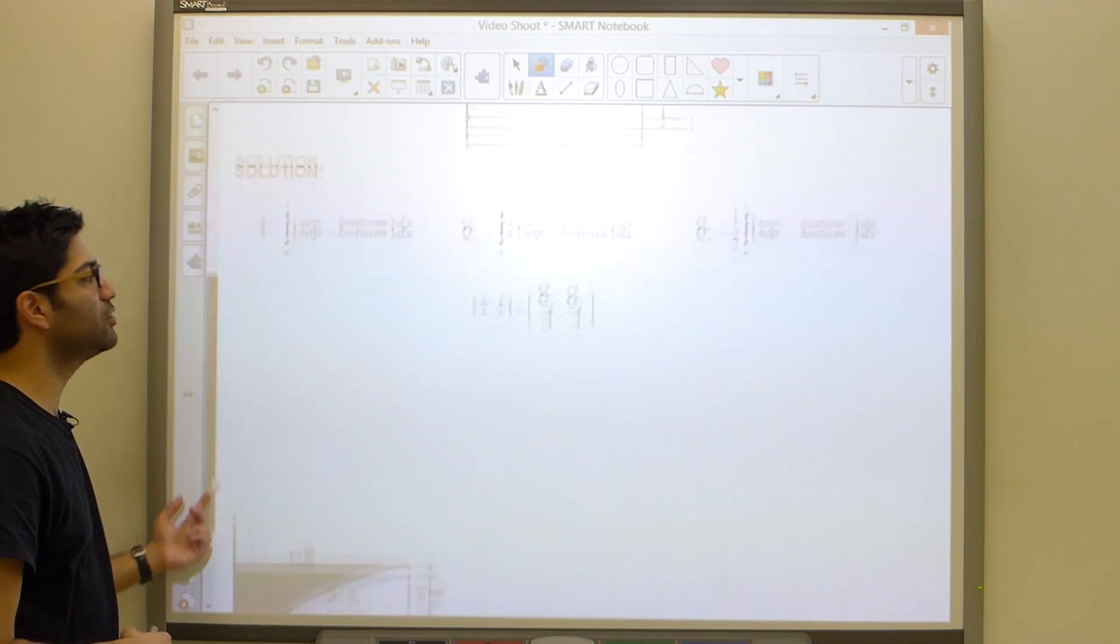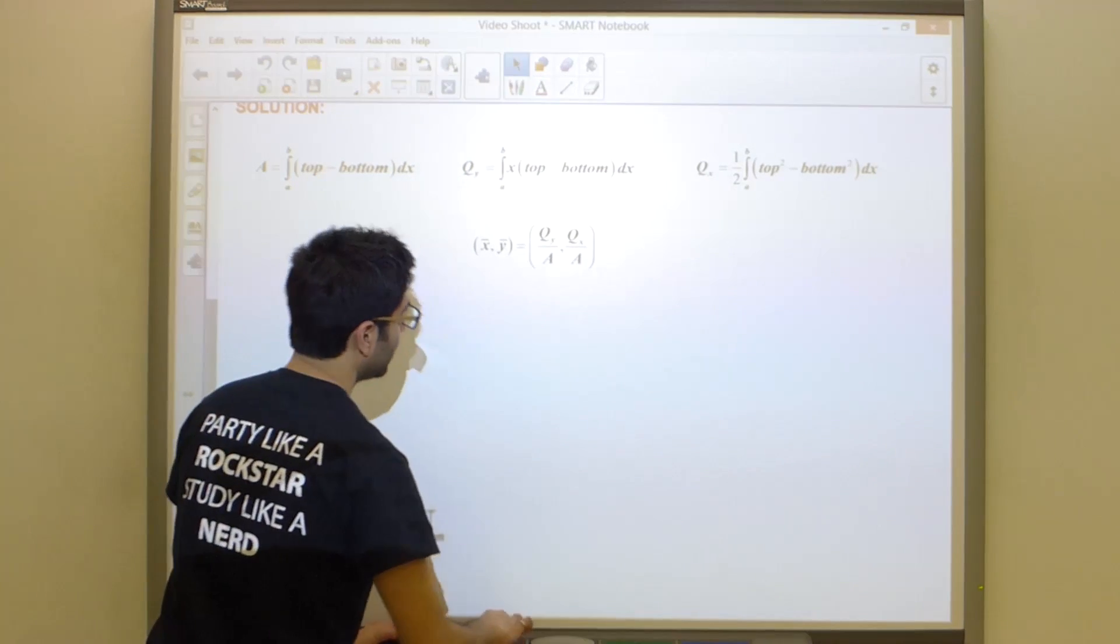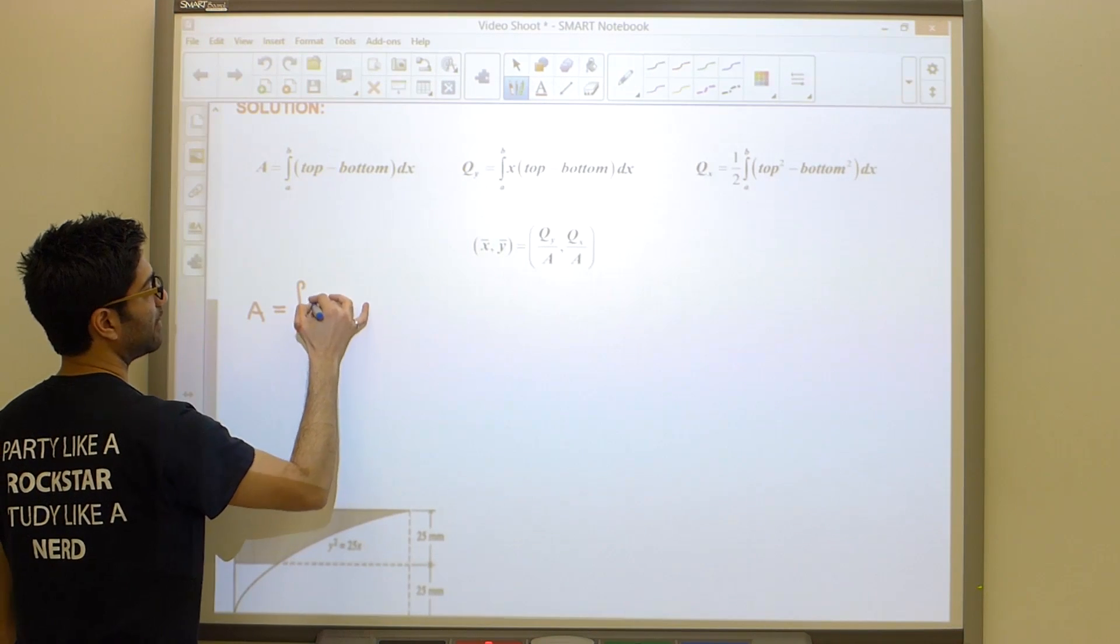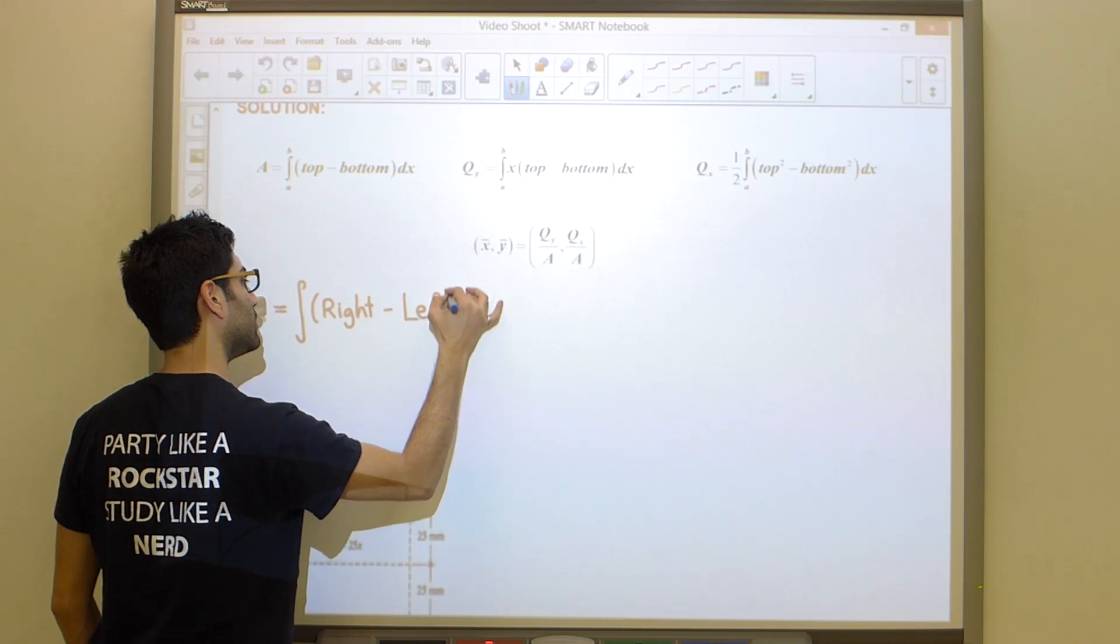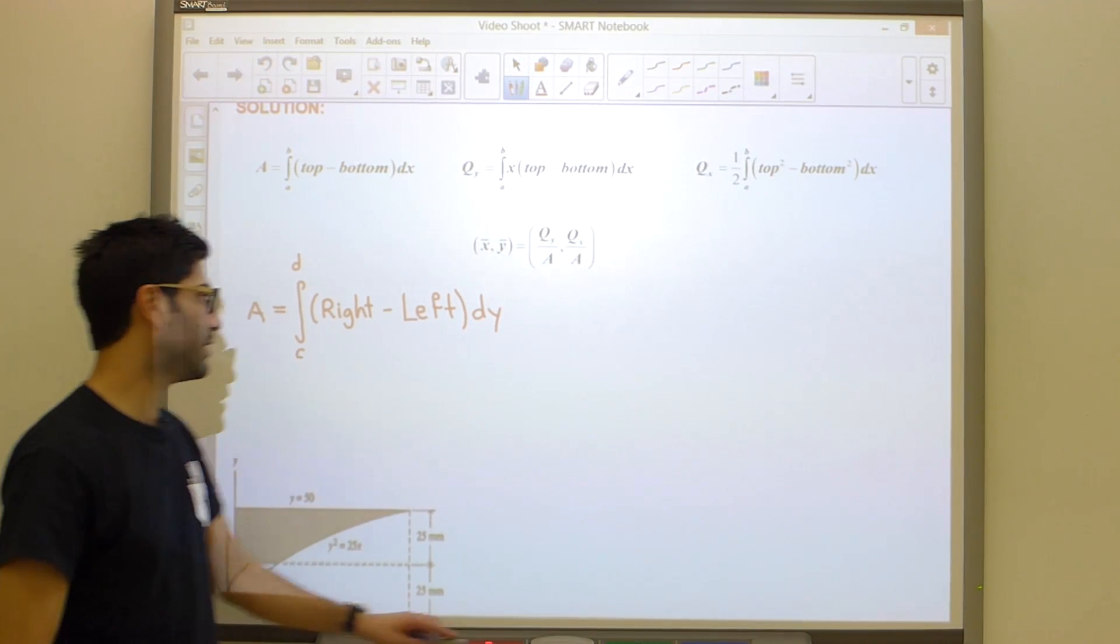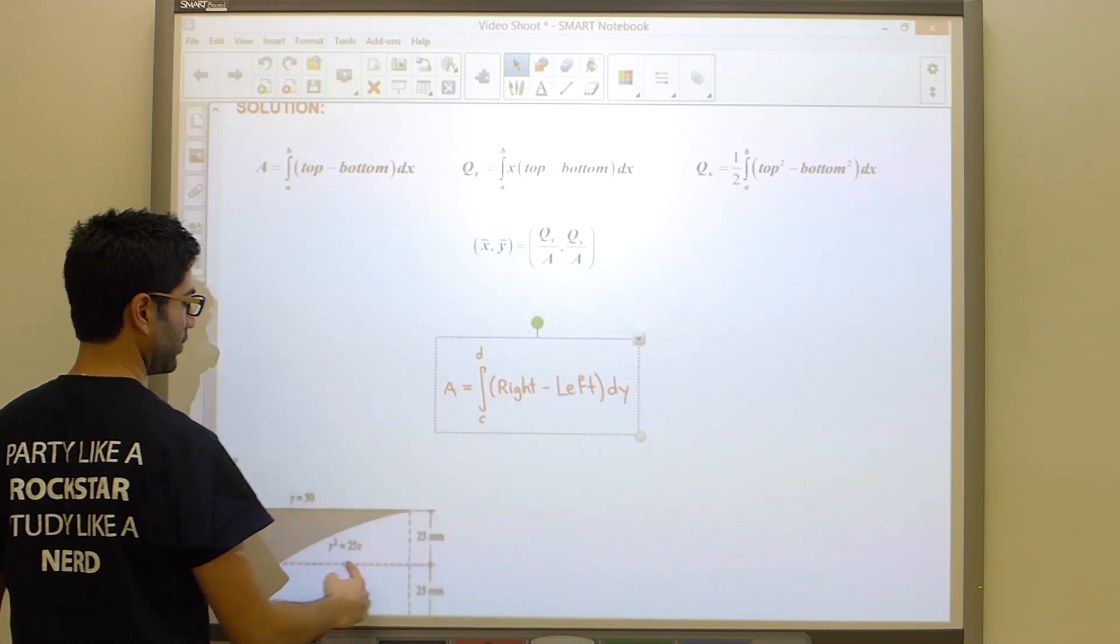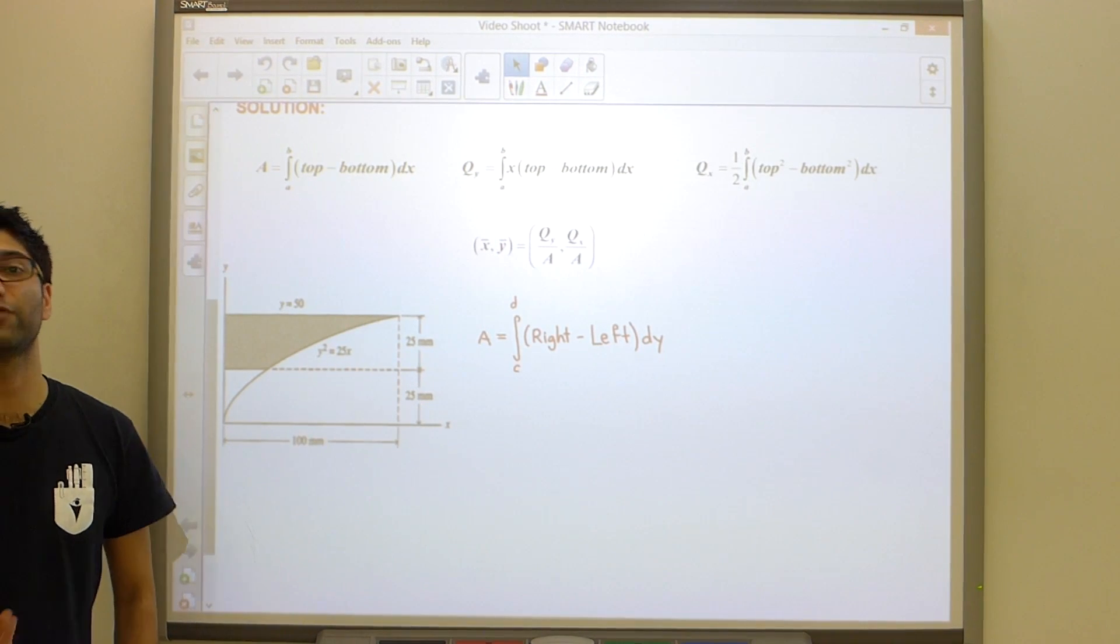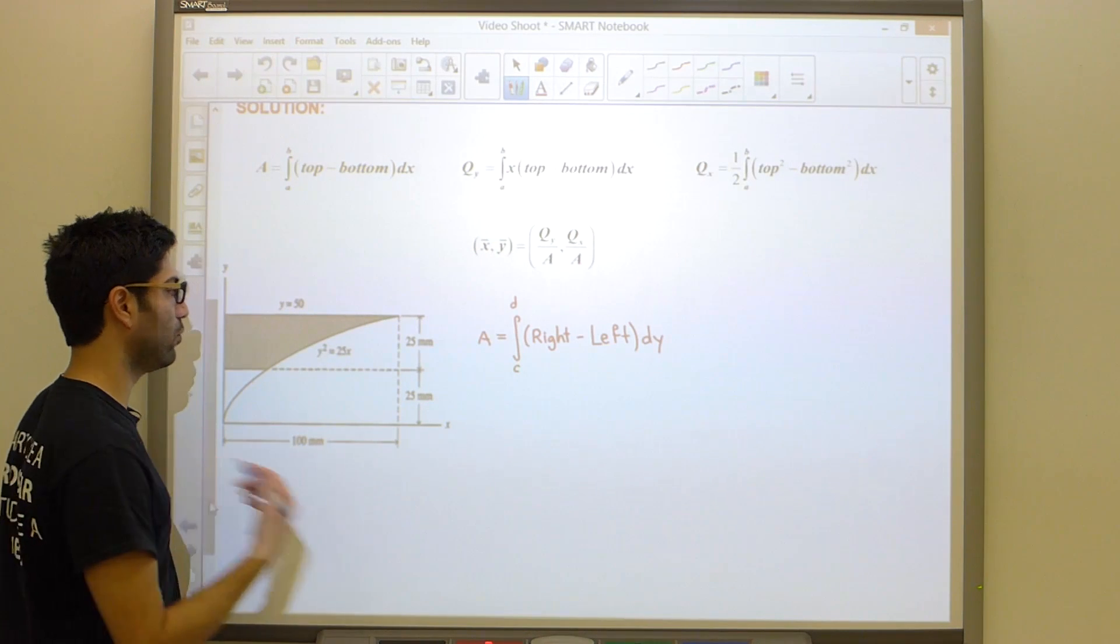So the area wouldn't change much. Our area would remain the same idea but it would be right minus left dy, and we'll go from c to d. If we apply this to our problem, this is what this equation becomes. Let's first understand what right and left are for us. This time around, instead of having x's in our integrals, we'll have y's.